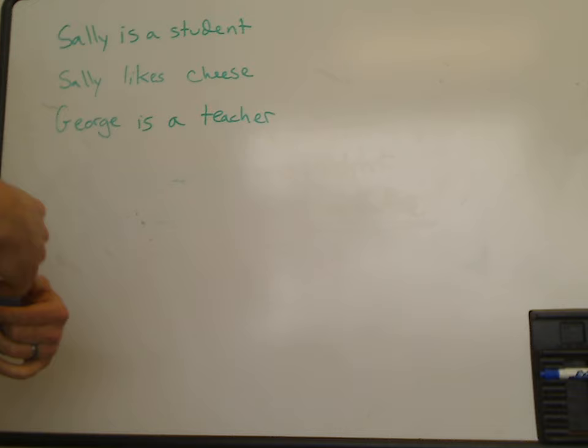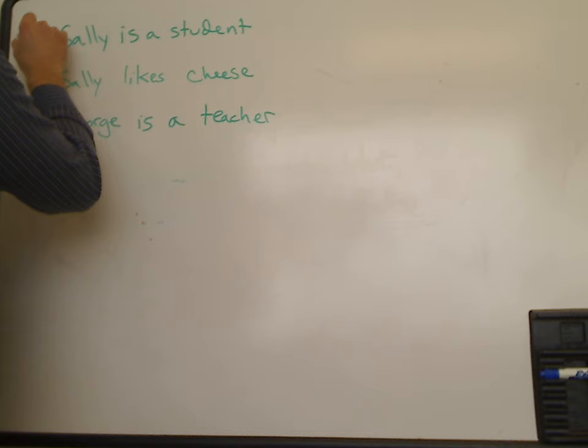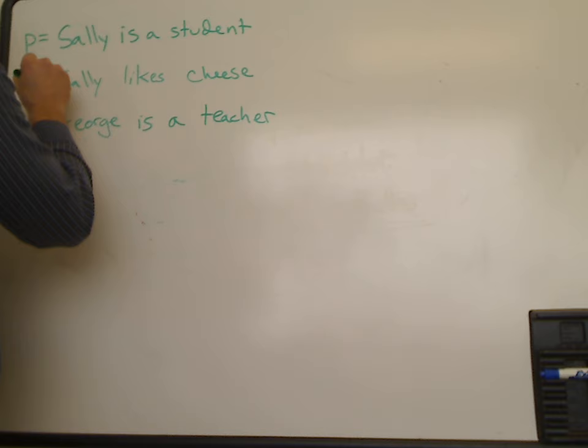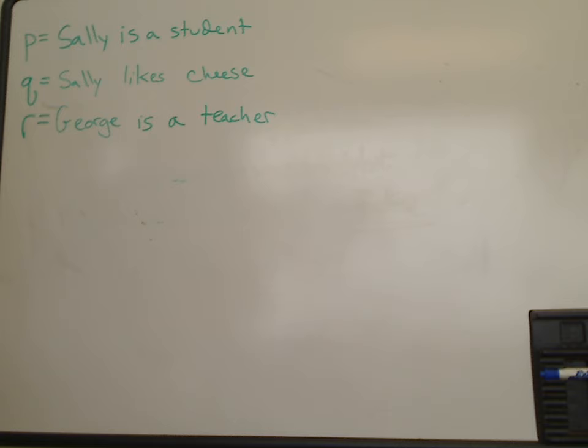So we could use a variable, and with variables we tend to use lowercase letters in convention. So I might say that P, the variable P, represents the proposition Sally is a student. The variable Q represents Sally likes cheese, and the variable R represents George is a teacher.